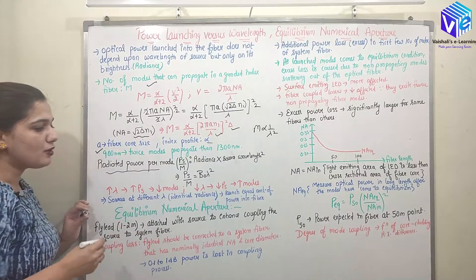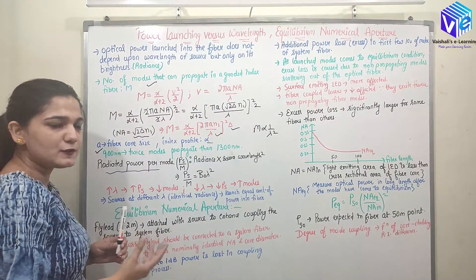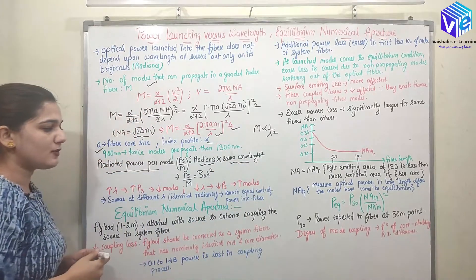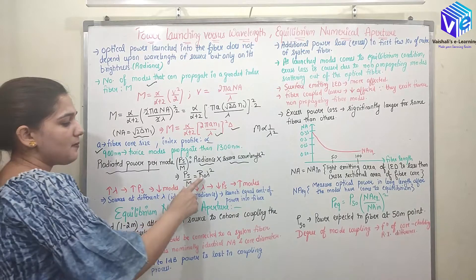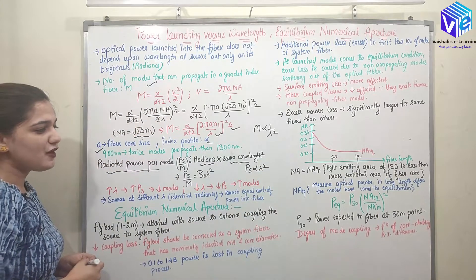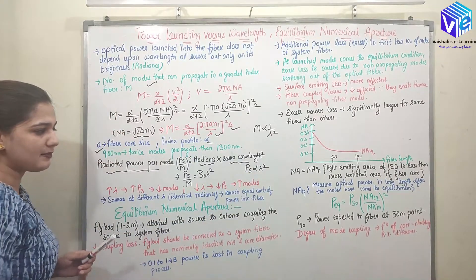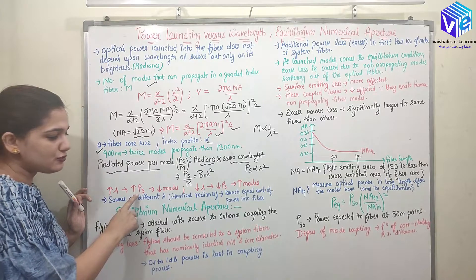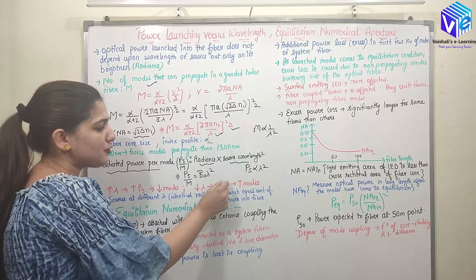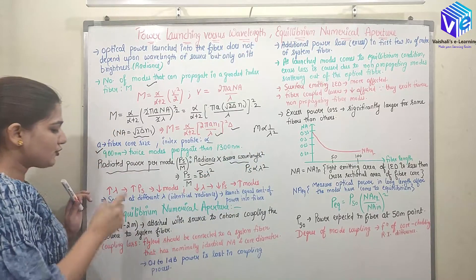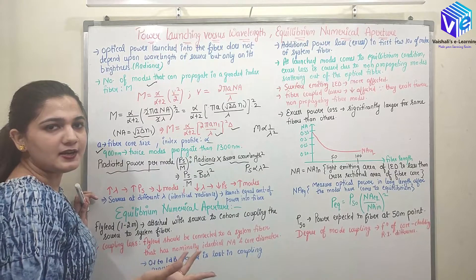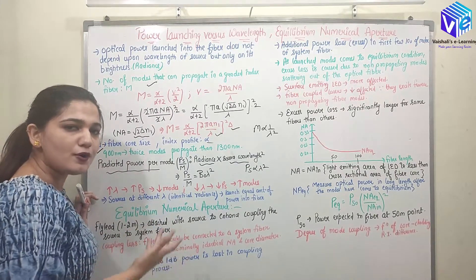The radiated power per unit mode is given by Ps/M — the power supplied by the source divided by M — which equals the radiance multiplied by the source wavelength squared: Ps/M = B₀ × λ². So Ps is directly proportional to λ². If I increase λ, Ps increases, but the number of modes decreases. The power per unit mode therefore remains constant regardless of wavelength.